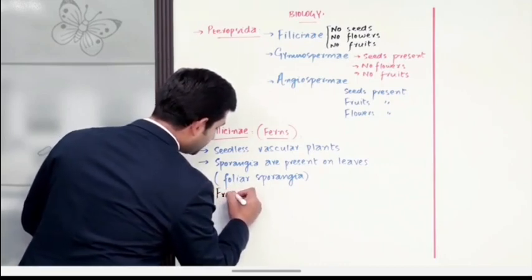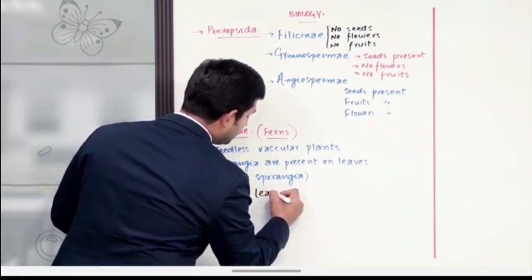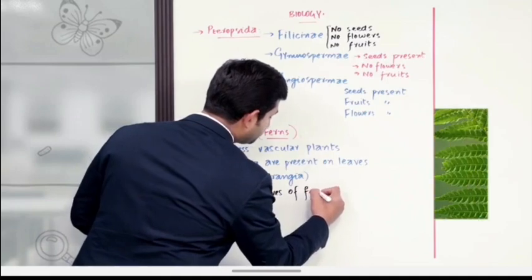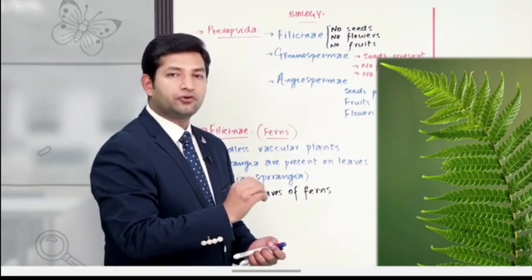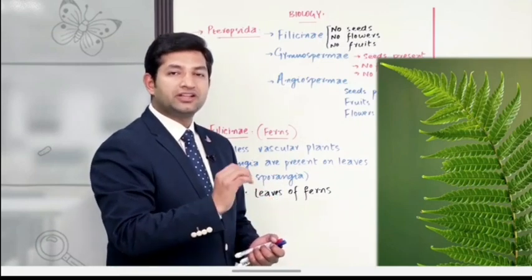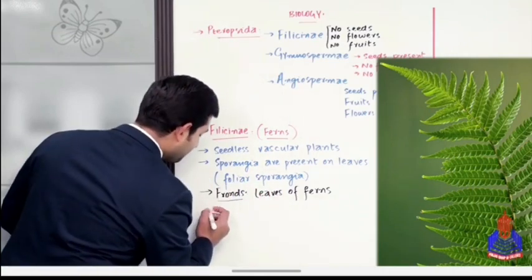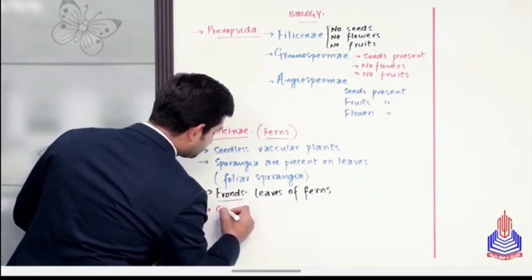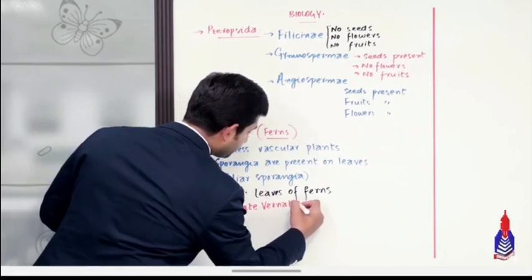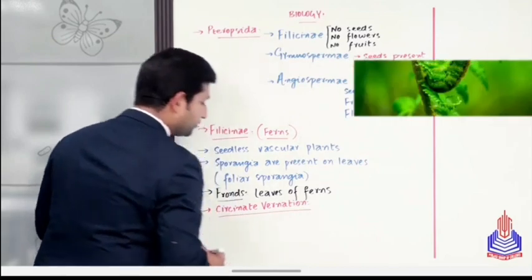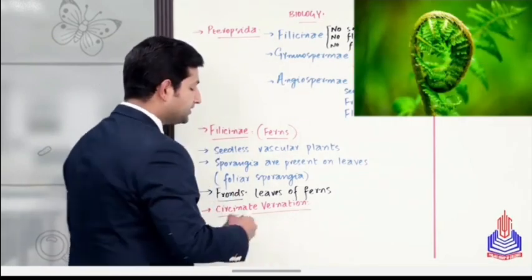What do you know about fronds? Fronds are the leaves of ferns. Ferns के जो पत्ते होते हैं उनके लिए हम ये specific term यूज़ करते हैं, that is fronds. और fronds की जो development है, उसके अंदर एक और important short question आपके लिए छुपा हुआ है, और वो क्या है - what is circinate vernation?